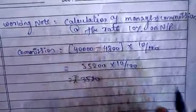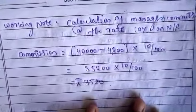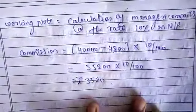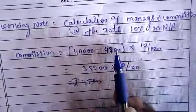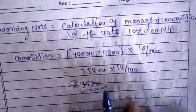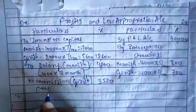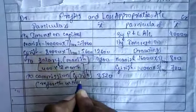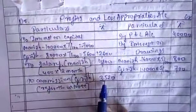Why did we deduct 4,800 here? In the earlier problem we were adding the salary amount, but here in this problem we are deducting it. In the earlier problem it mentioned 'before charging the salary,' but in this problem it mentions 'after charging the salary.' That's why we are deducting the salary amount from the net profit to calculate the manager's commission of 3,520. Refer to the working note to understand how this commission amount is calculated.